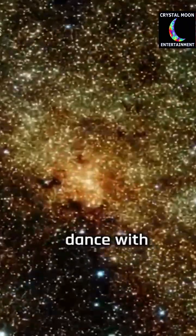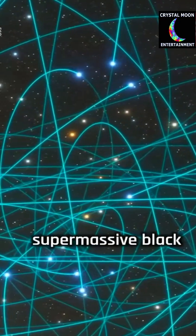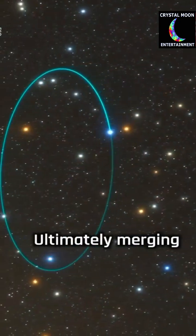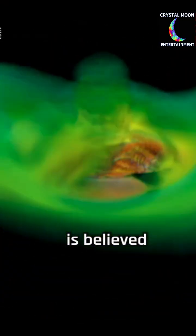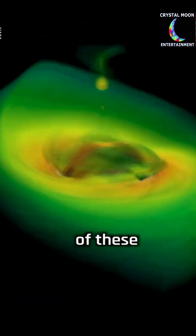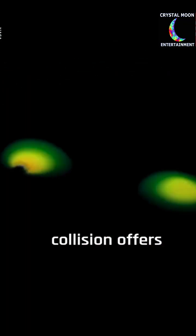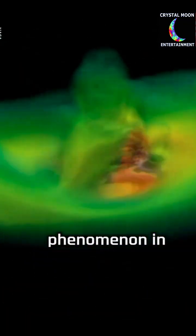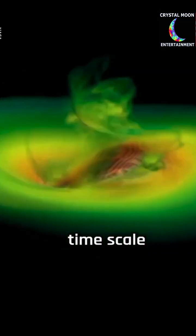This means that the supermassive black hole it harbors will also eventually be drawn into the Milky Way's center, where it will engage in a gravitational dance with Sagittarius A*, our own supermassive black hole, ultimately merging to form an even more massive entity.